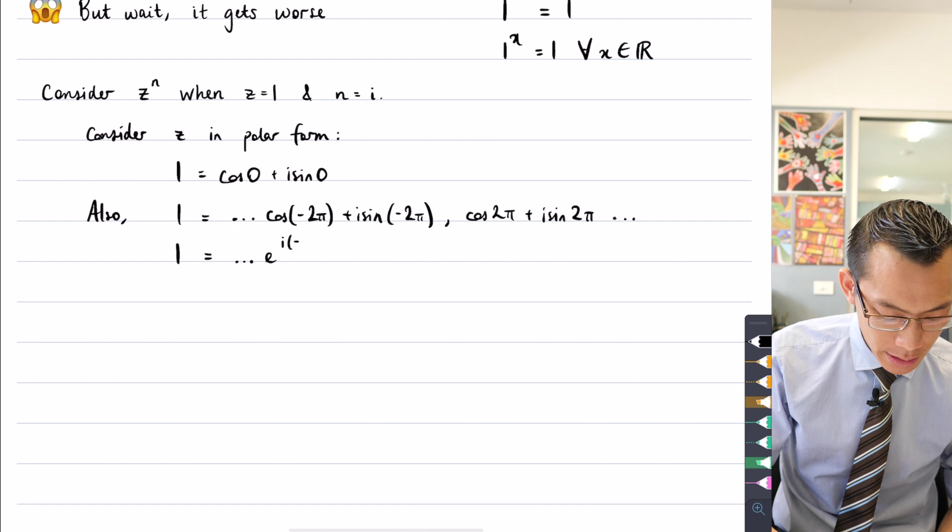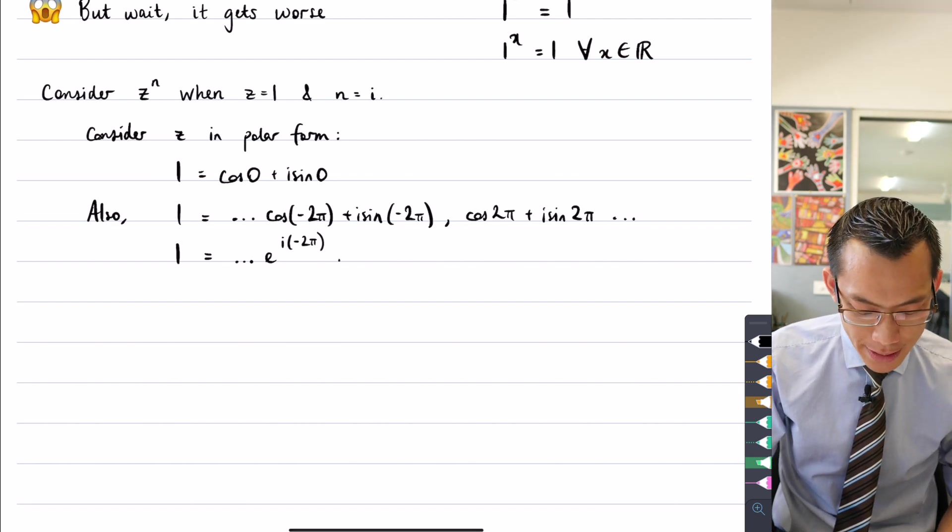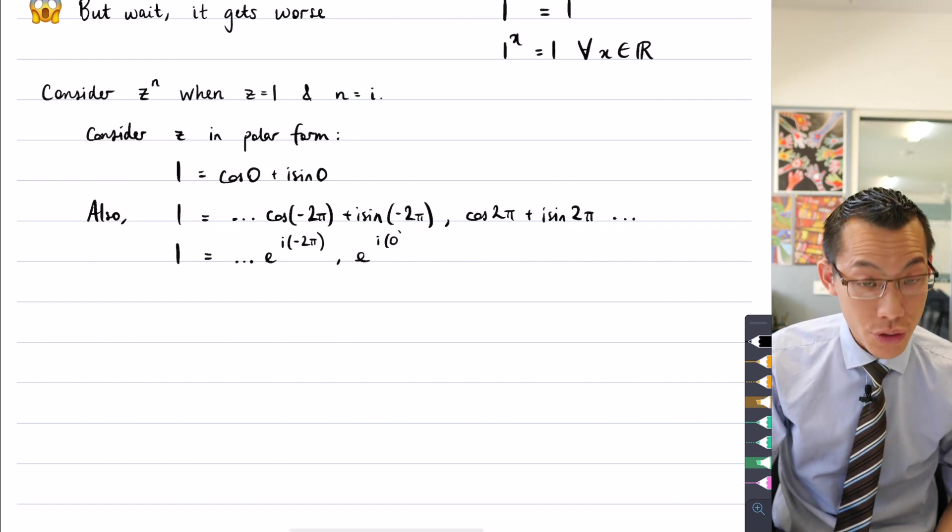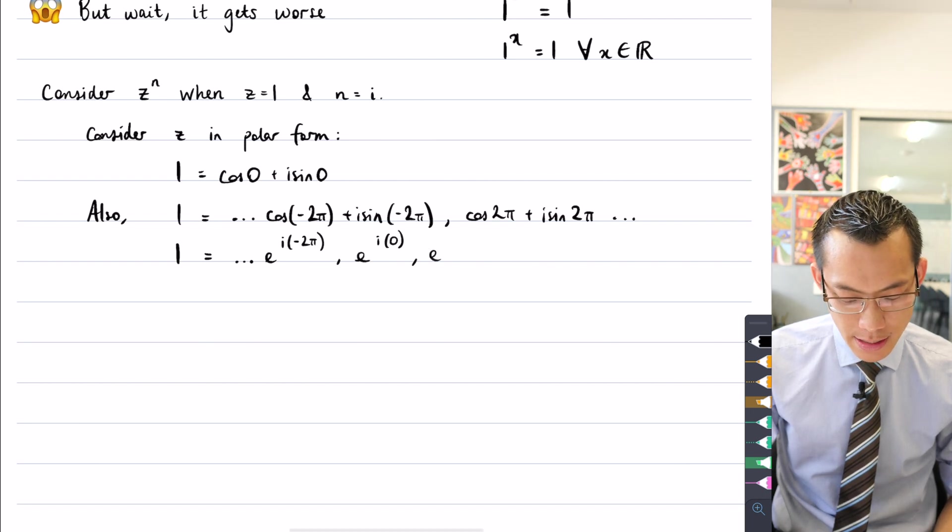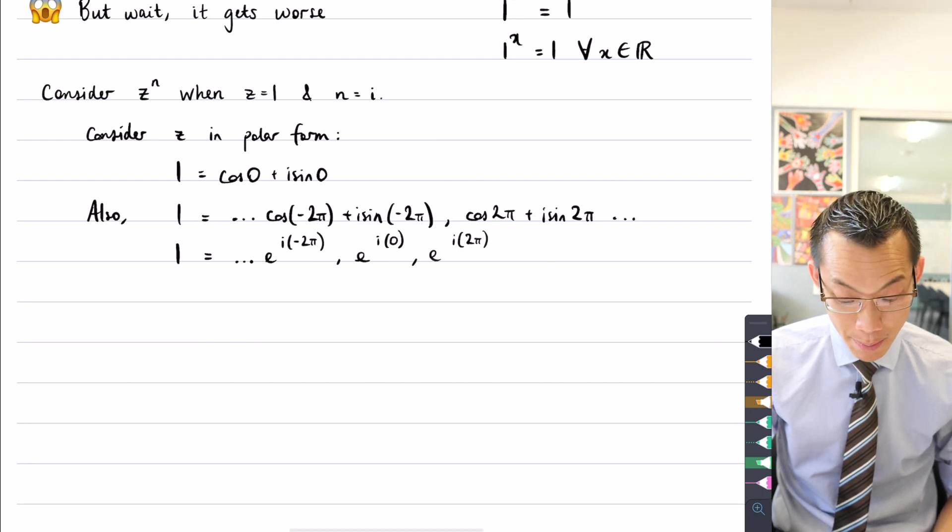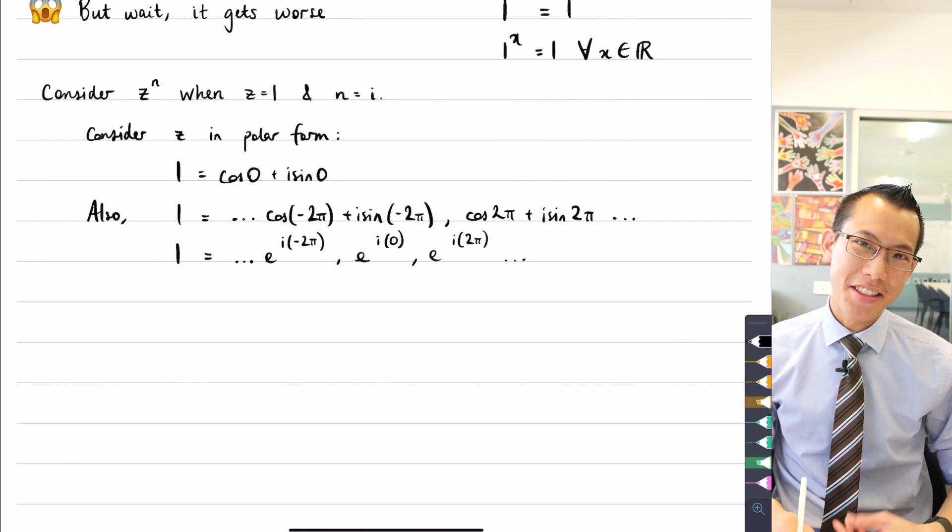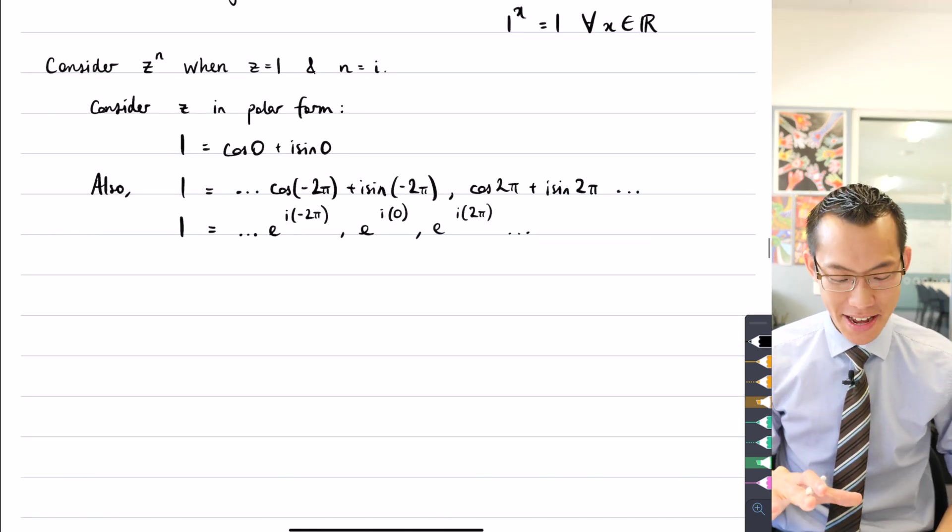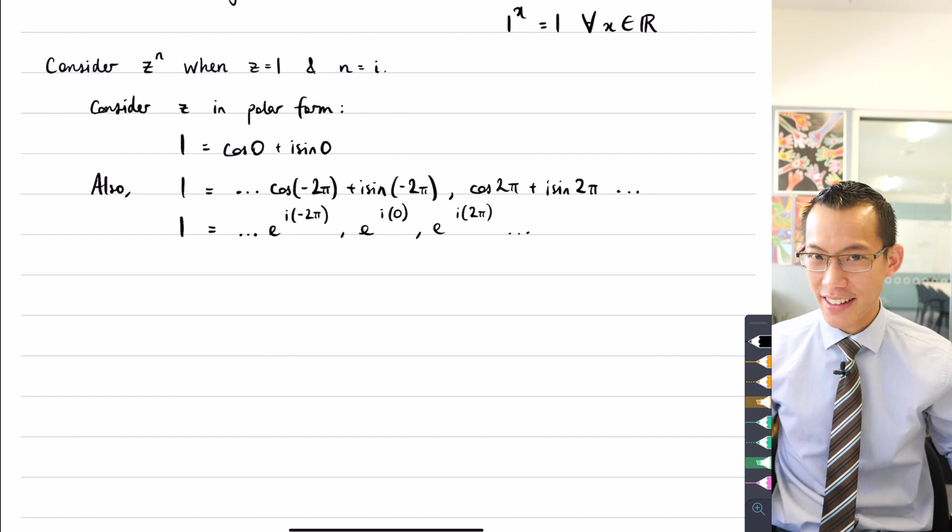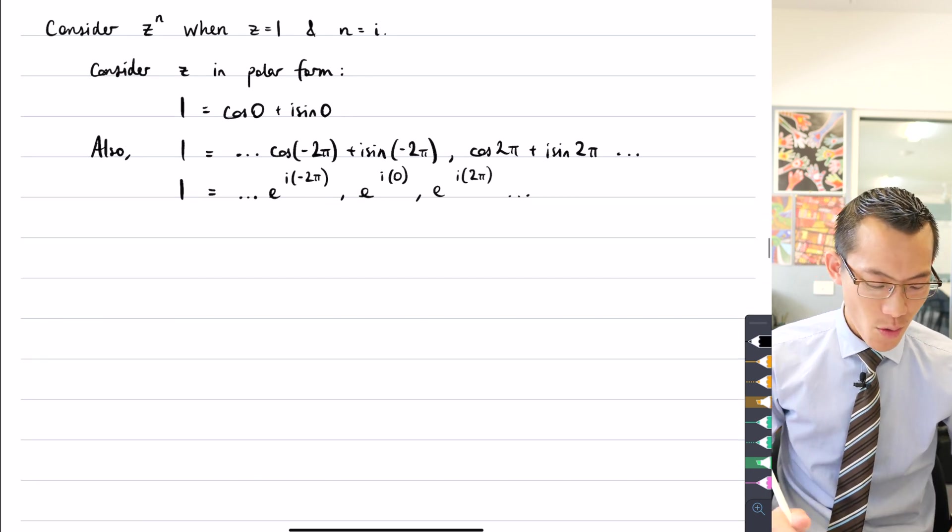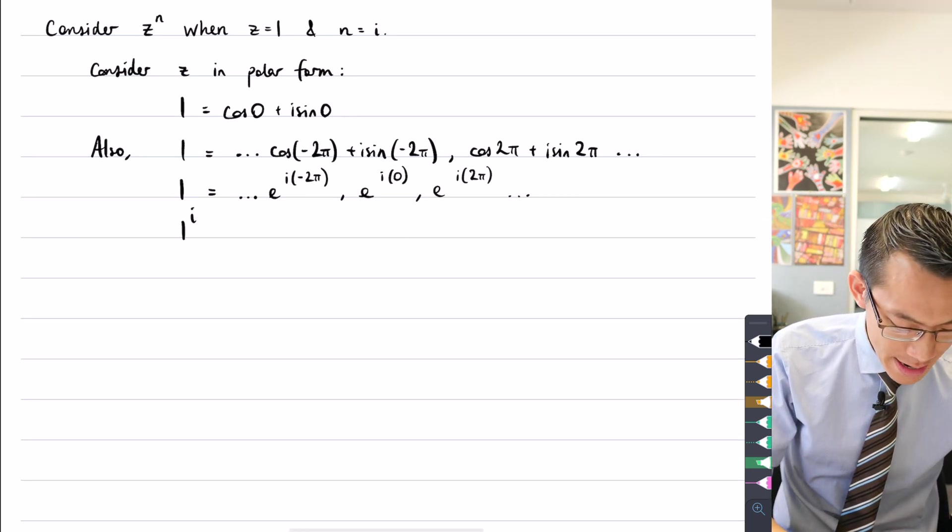It's e to the i negative two pi, it's also e to the i zero, and it's e to the i two pi, positively, and of course that goes on. Now that I've written this in exponential form, I'm ready to start thinking about what happens when I raise everything to the power of i. One to the power of i is going to be equal to, well let's just think about this.